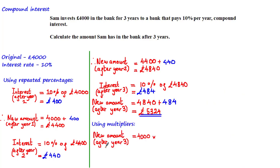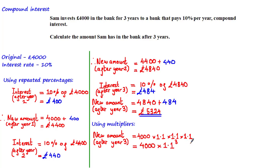Using multipliers, the new amount after year one is £4,000 multiplied by 1.1 — the multiplier equivalent to a 10% increase. To get the amount after year two we multiply again by 1.1, and after year three by another 1.1. This is the same as 4,000 multiplied by 1.1 to the power of 3, which gives the same answer of £5,324.